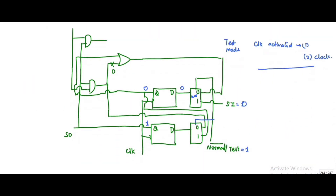Apply the test pattern zero and one to the combinational circuit inputs. Since this point is stuck-at-zero, I need to get one as the good result — zero would be the faulty result. To get one at the output the two inputs to the AND gate must both be one. Since both inputs are one, the output becomes one. This is the primary output and the other is the primary input.